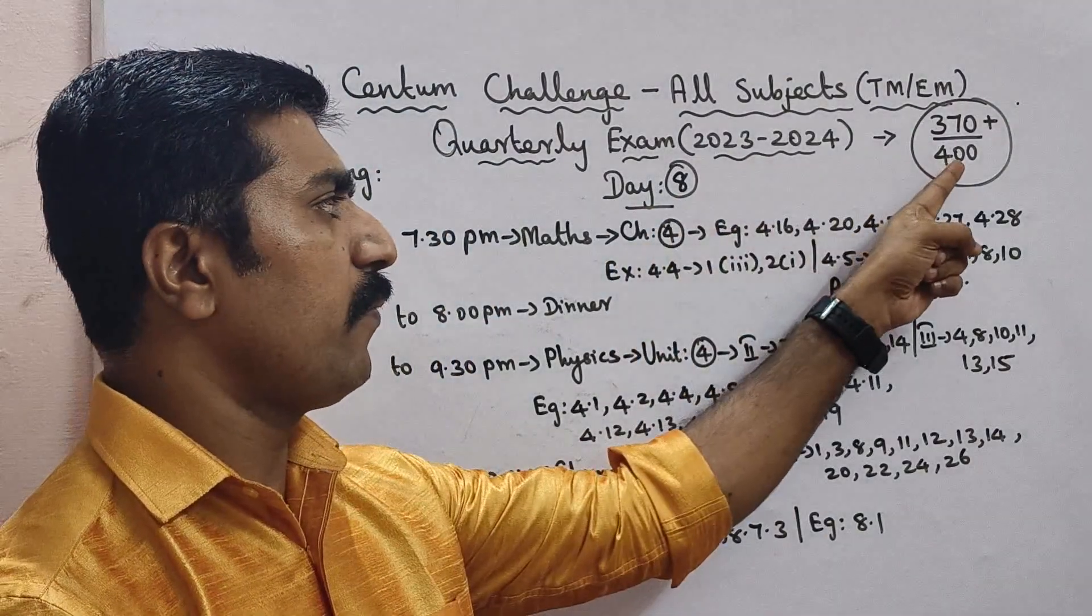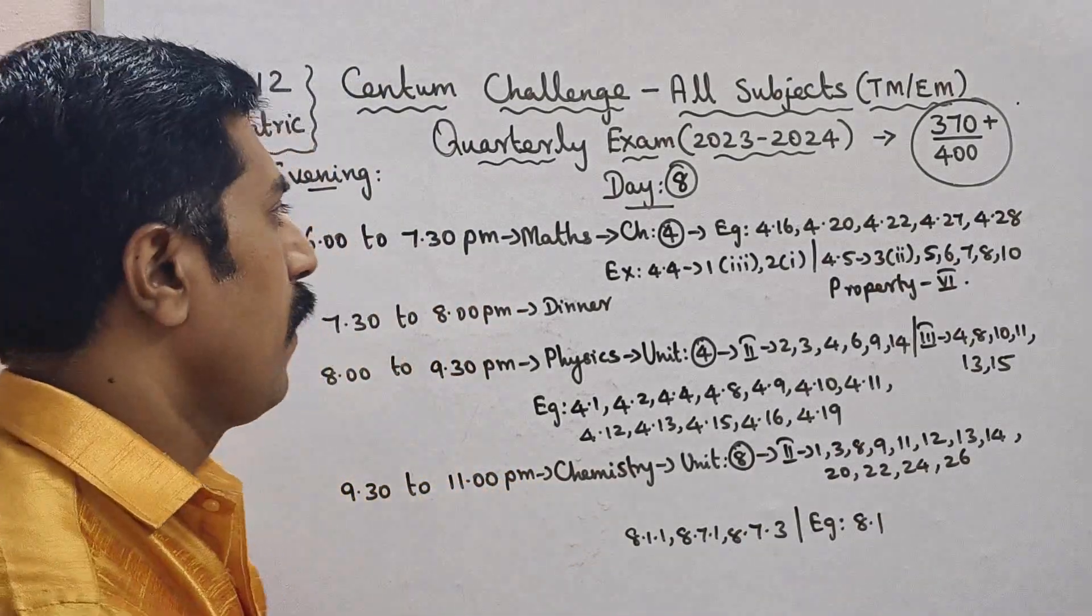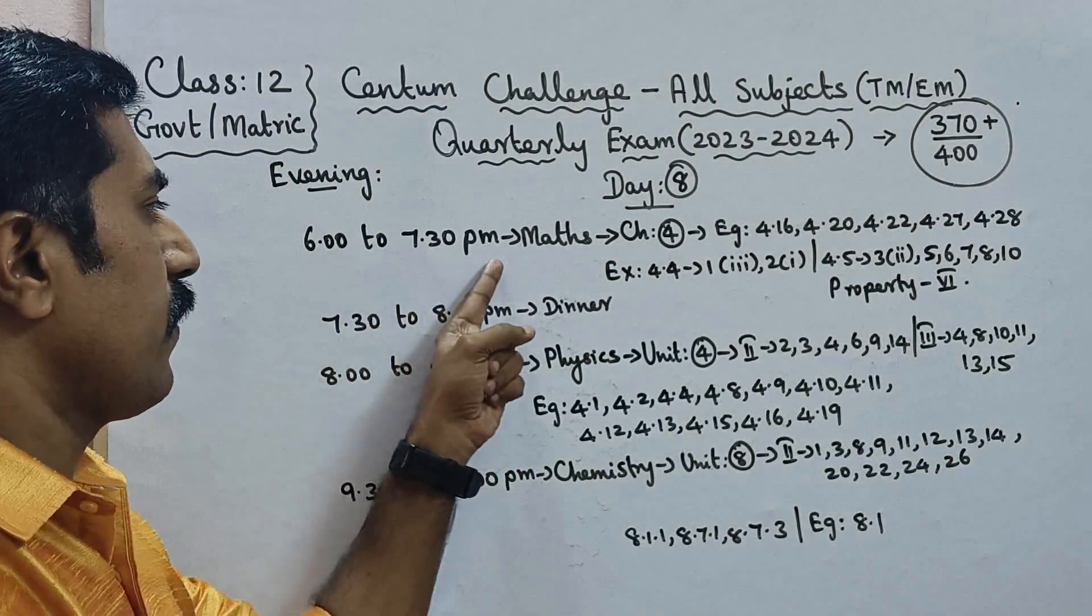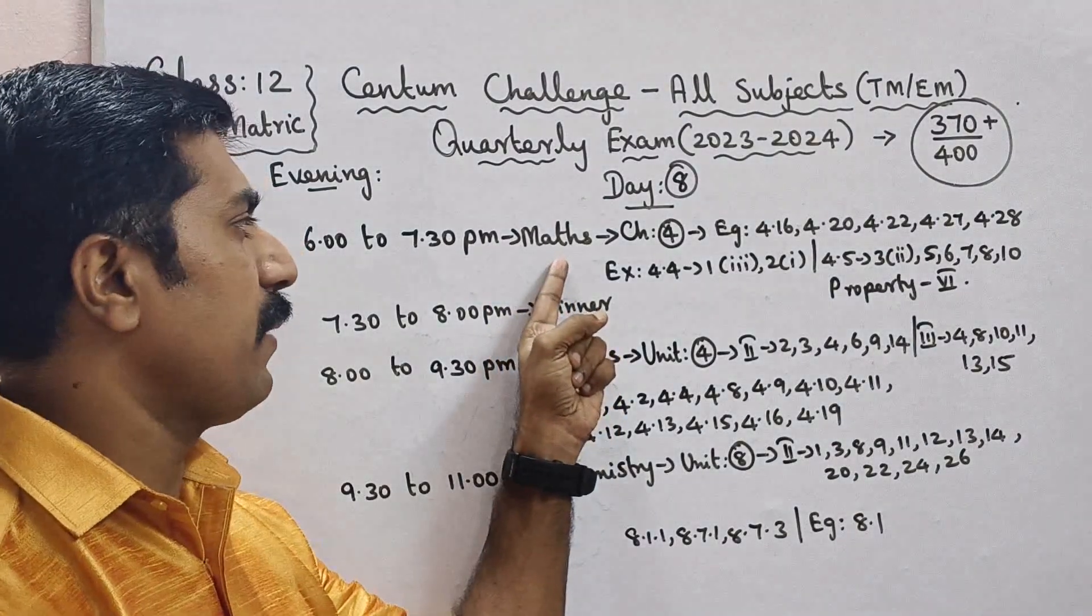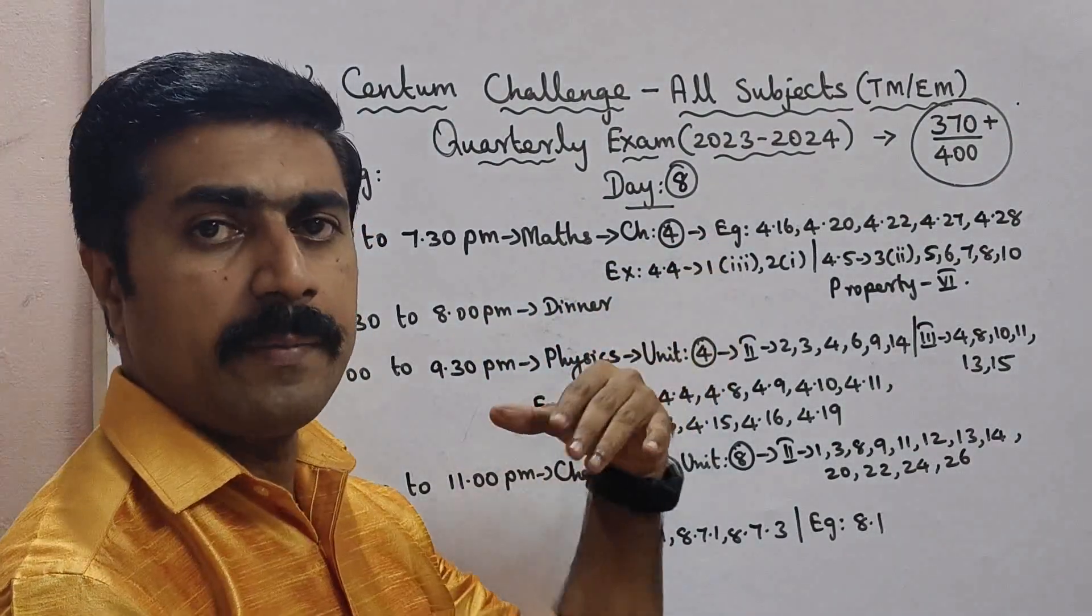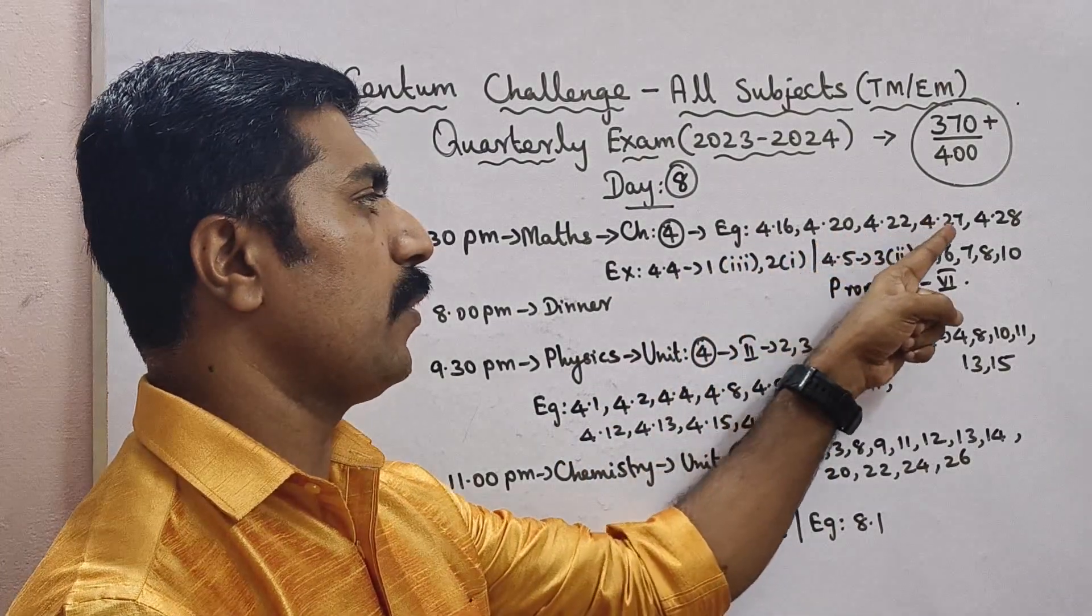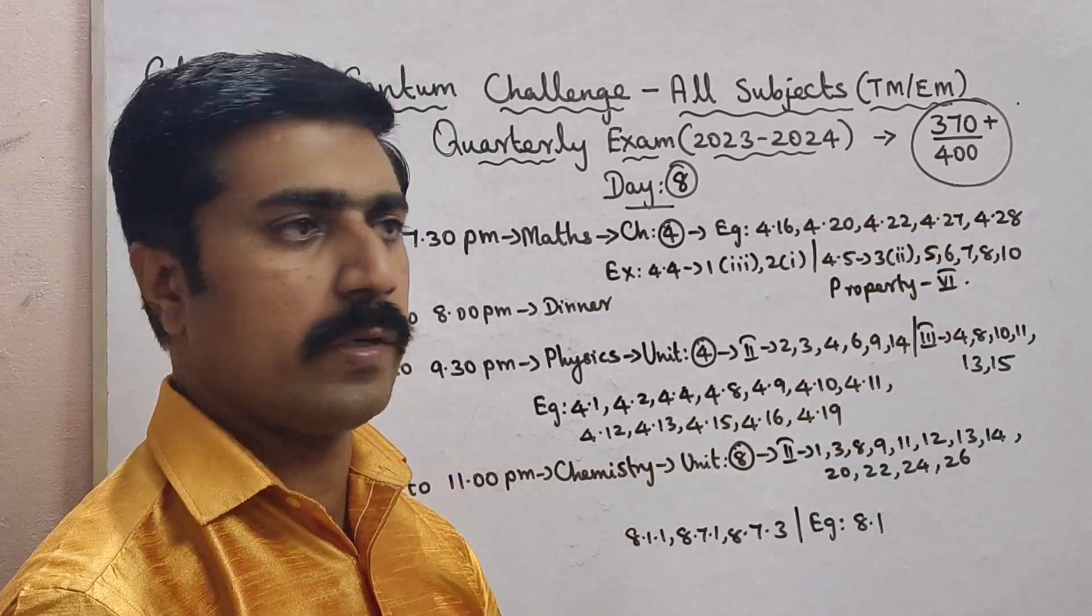Day 8 is scheduled, 370 to 400 marks. In the evening, 6 to 7:30 pm, one and a half hours on maths, chapter 4 - exam chapters 4.16, 4.20, 4.22, 4.27, 4.28.